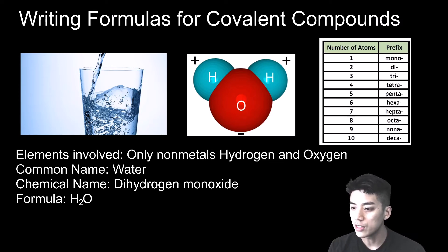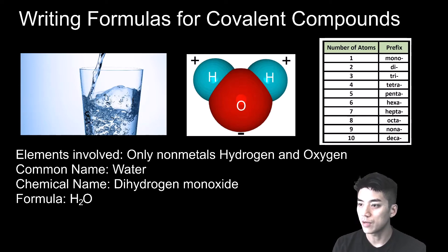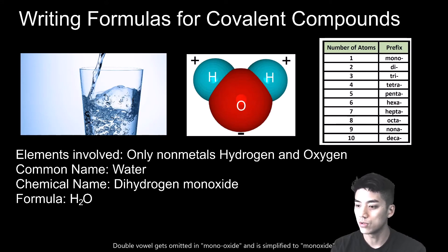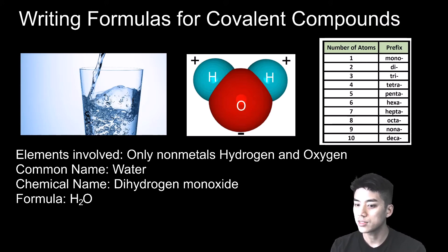So if it's covalent, it's going to follow a different set of rules where I don't need to crisscross the charges like I did for ionic compounds. We know that the common name is water. The chemical name is dihydrogen monoxide. If you look at the formula, it's H₂O. Dihydrogen means there are two hydrogens — using the prefix chart, the number of atoms is two, so the prefix is 'di.' The prefix 'mono' means one, so you get monoxide. There's a language rule where if you have a double vowel, it gets omitted, so you call it monoxide instead of monooxide. So dihydrogen monoxide is the chemical name for water because the formula is H₂O.